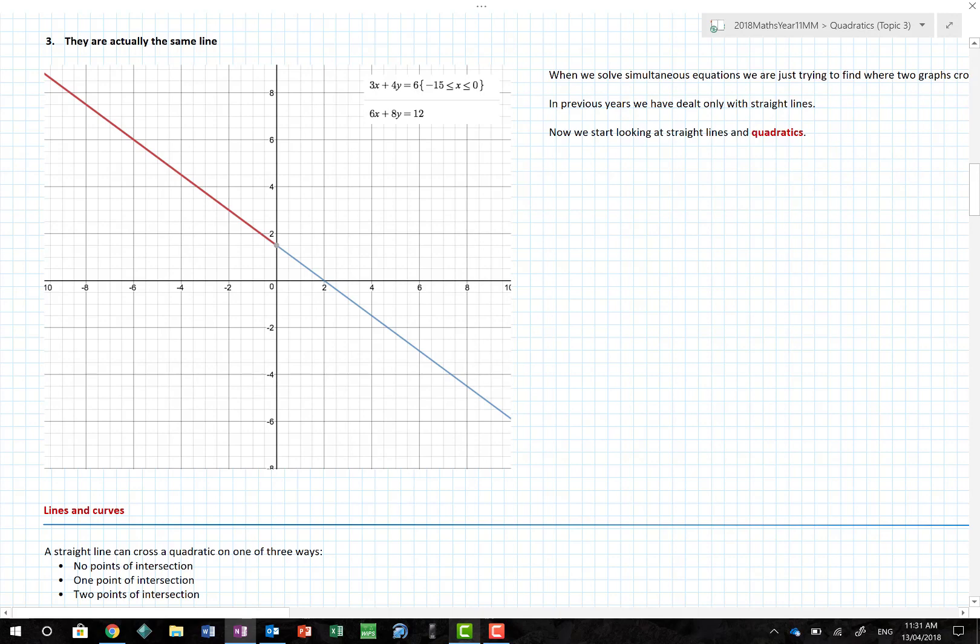The third one is they are exactly the same line. I've used Desmos to show that 3x plus 4y equals 6 and 6x plus 8y equals 12 are exactly the same line. If I take the first equation and multiply everything by 2, I get the second equation. In this situation, they have infinite solutions because they cross infinite number of times.